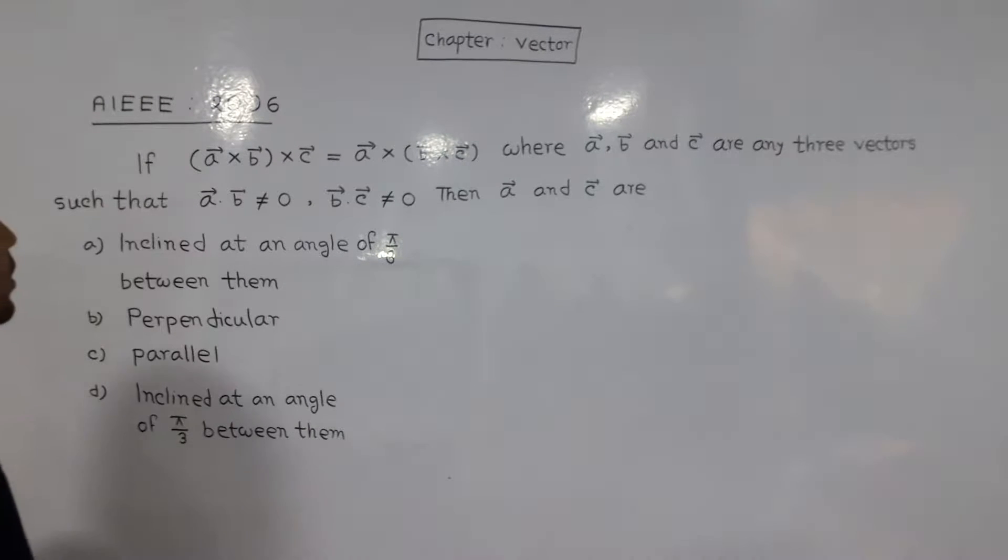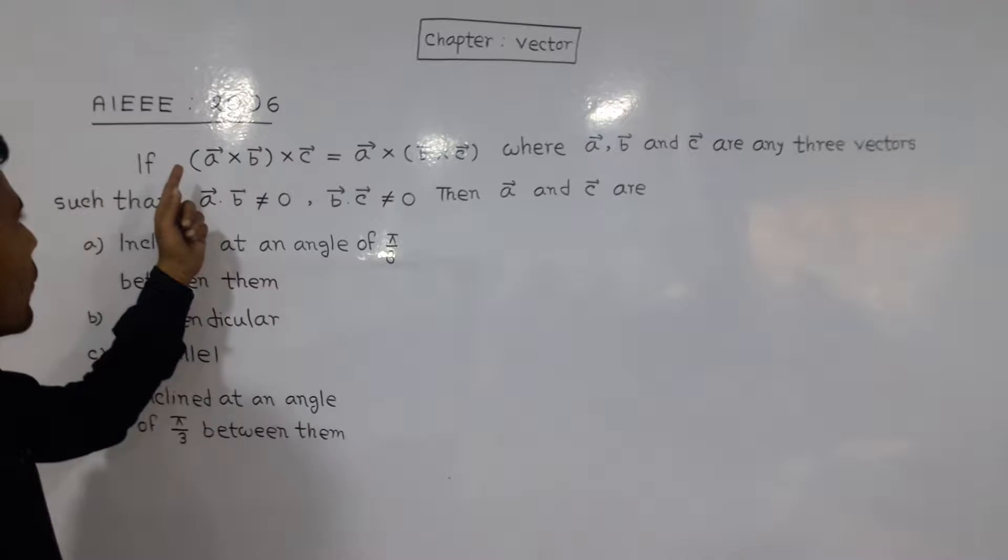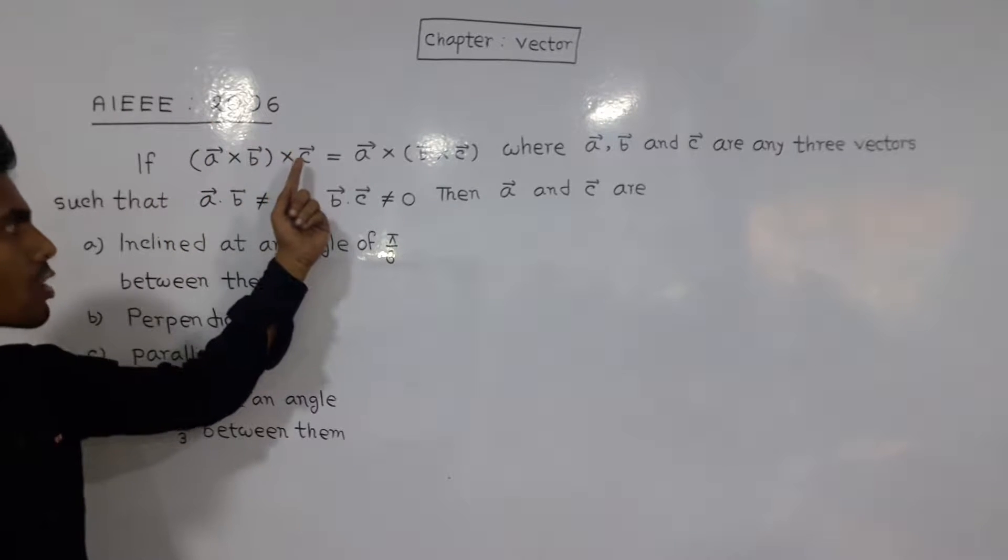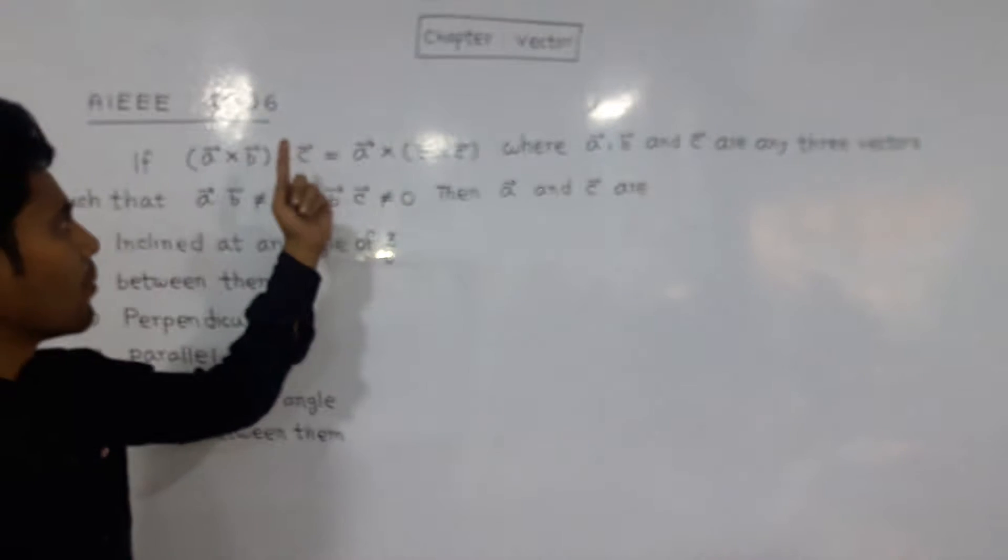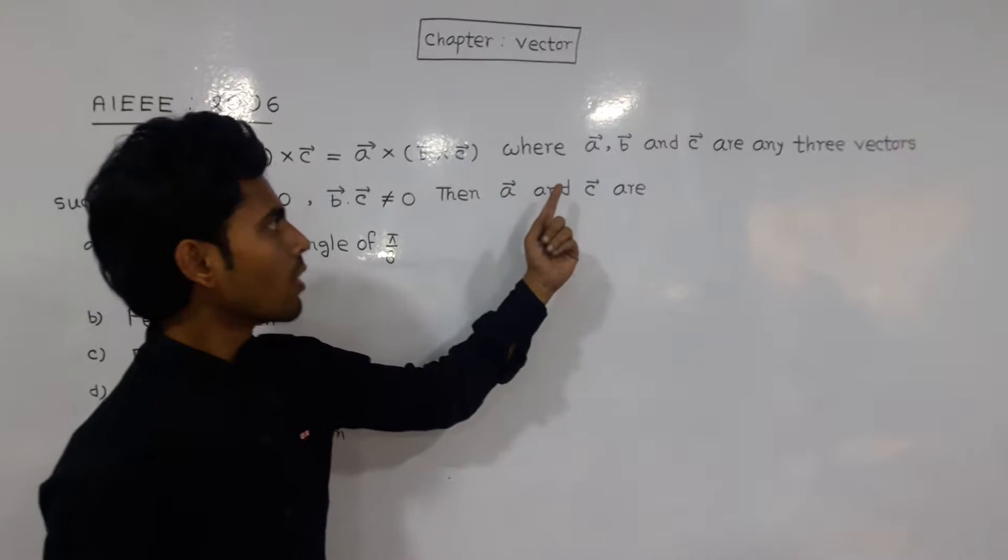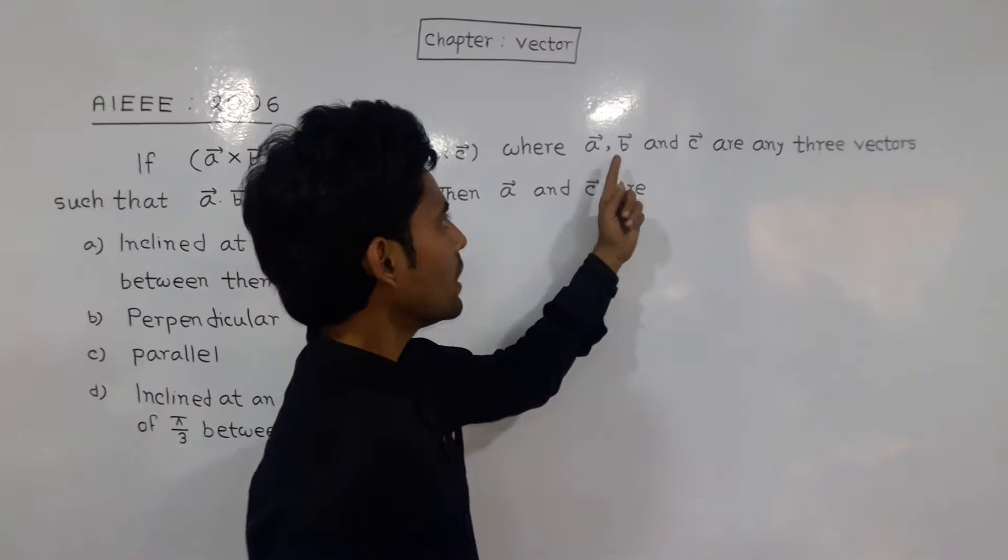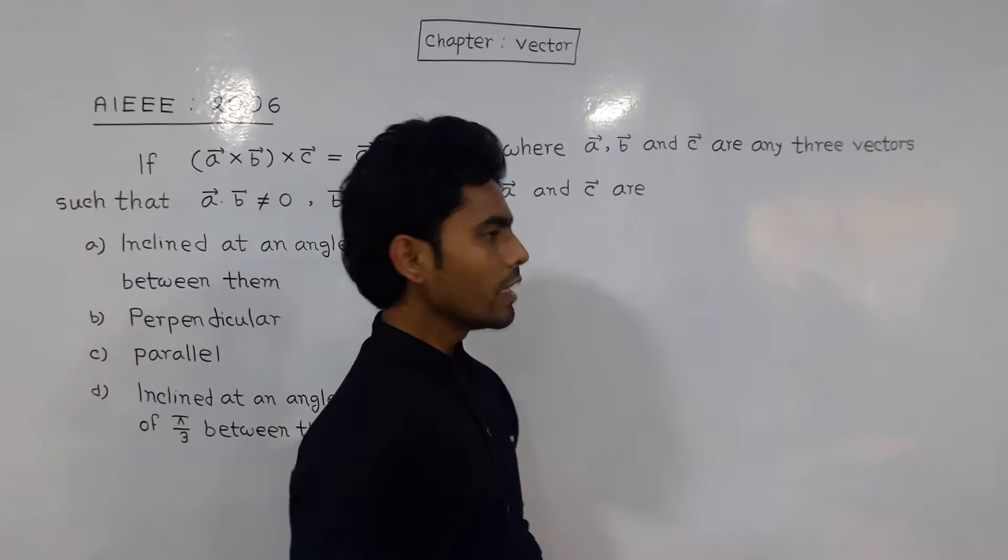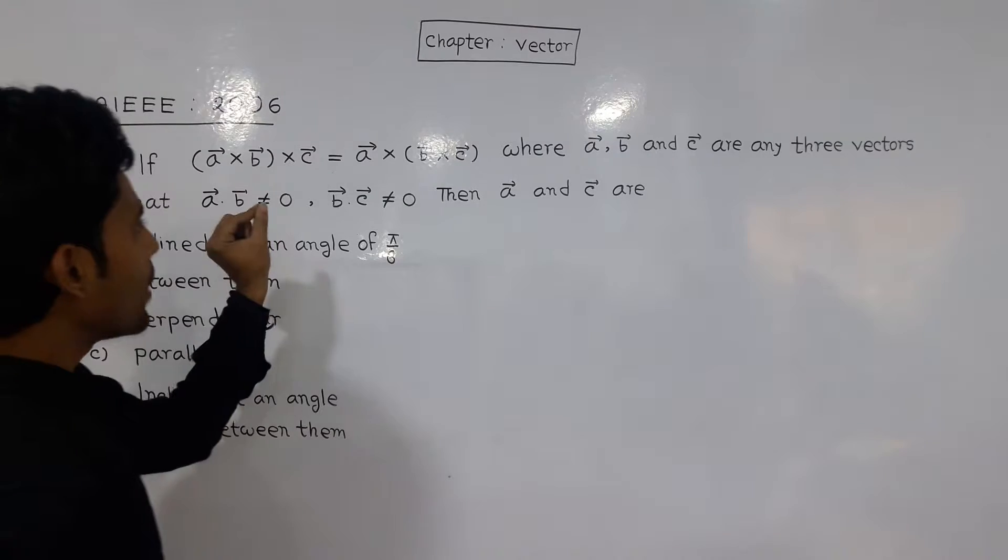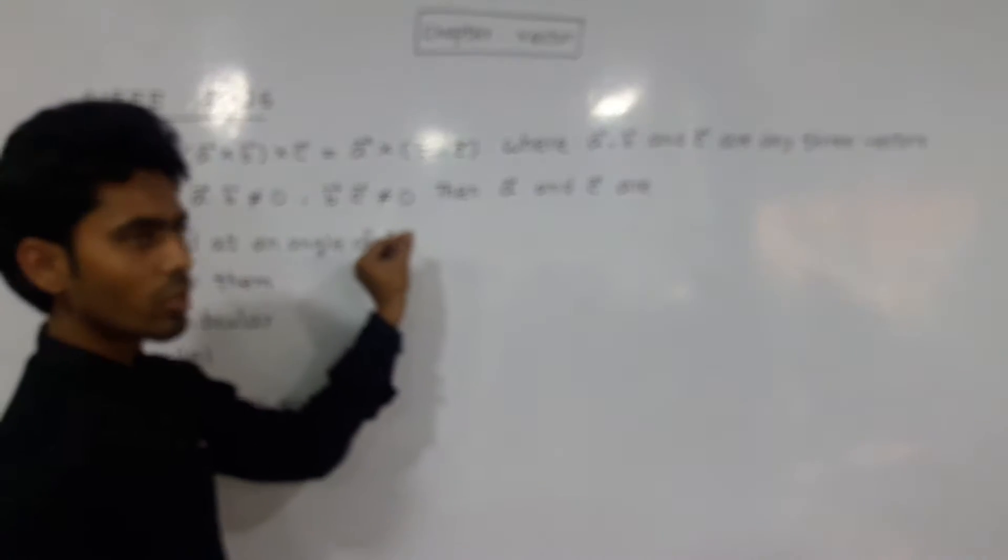Next question, AIEEE 2006. If vector a cross vector b cross vector c equals vector a cross bracket vector b cross vector c, where vector a, vector b, and vector c are any three vectors such that vector a dot vector b not equal to zero, vector b dot vector c not equal to zero, then a and c are...